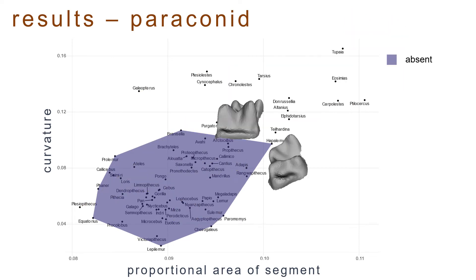Additionally, some taxa typically categorized in the literature as lacking paraconids present with higher proportional area and curvature than would be expected. As it turns out, this is because these taxa possess other features within that region of the tooth that are not homologous to the paraconid, but still have high degrees of curvature, which you can see in these two teeth here.